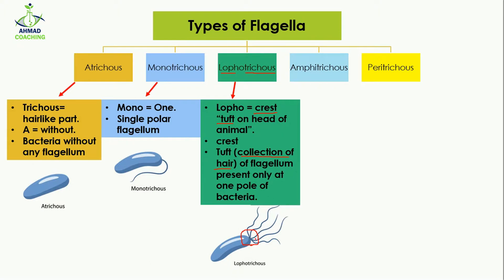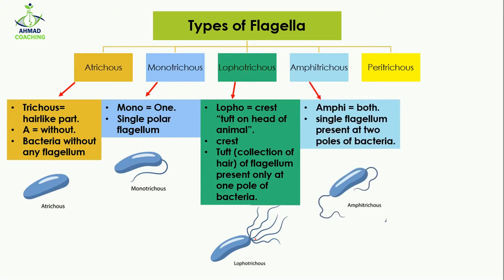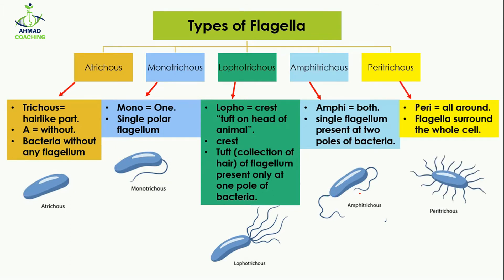The fourth type is amphitrichus. 'Trichus' means hair and 'amphi' means both, so it means that flagella are present on both sides. A single flagellum is present at both poles of the bacteria — you can see that one pole and the other pole both have a singular flagellum.